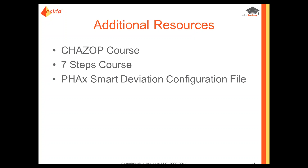Another question: we have attempted CHAZOP in the past and struggled because the programming people in the room did not know all the potential failure modes of the DCS — any tips? What we're trying to do with smart deviations is to pre-document the most common and typical modes you should ask. You might also need to go down to the loop drawing level and look at where the data is coming from — whether over network communications or into a specific node.